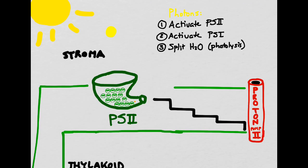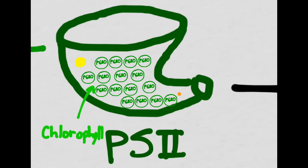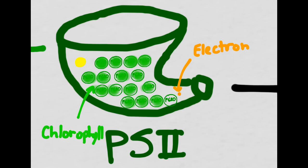A photon of light, after traveling 93 million miles from the sun to the plant cell, is going to make contact with PS2. PS2 is full of pigments called chlorophyll, including a specific pigment called P680, which absorbs sunlight of the wavelength 680 nanometers. The photon contains a significant amount of energy, which will then excite all of the pigments in photosystem II. You'll notice that the last pigment molecule has a small orange dot next to it, representing an electron which is currently in its low-energy state. Once all of the pigments have been activated by the photon, the electron will become a high-energy electron.